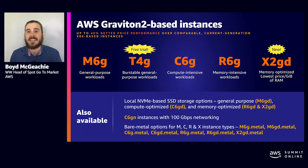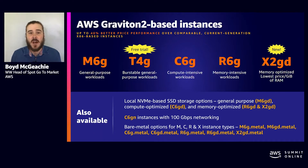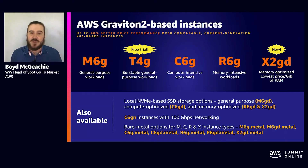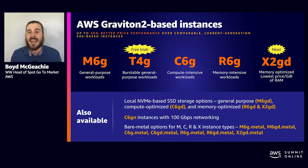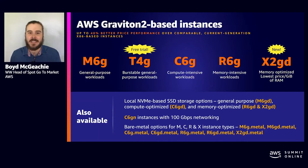The Graviton2 instance type provides up to 40% improvement in price performance versus comparable current generation x86 instance types — a quite significant potential saving. We have almost all the core families: general purpose M6G, compute-intensive C6G, memory-intensive R6G. New additions include the T4G burstable instance type and the X2GD, a super high memory instance type with the lowest memory-per-price of any instance type available.